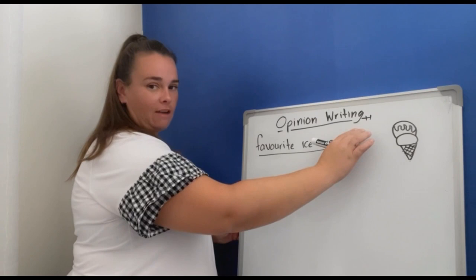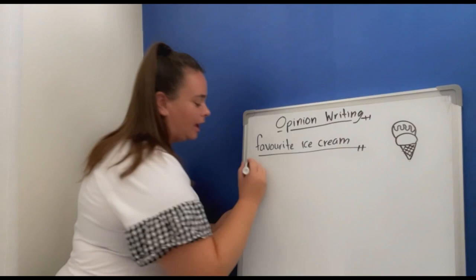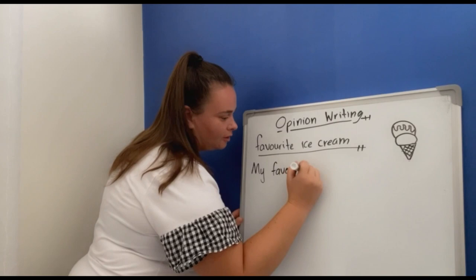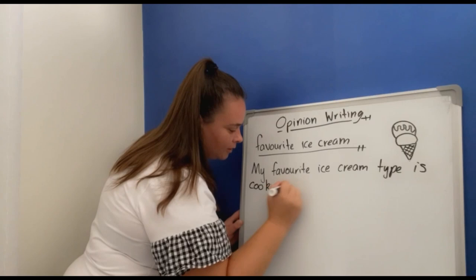We've got a quick picture. We've got our topic of our writing and we have our subject of our writing. Let's begin. Let's just start off with our favourite ice cream. My favourite ice cream type is cookies and cream.